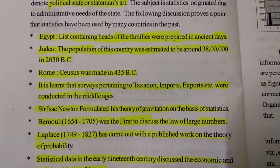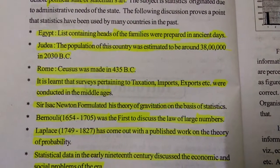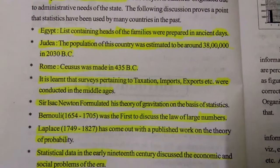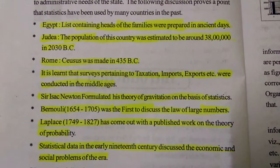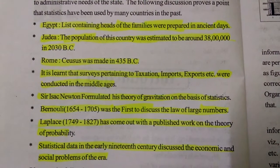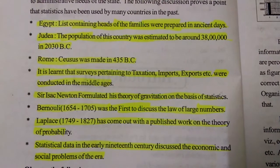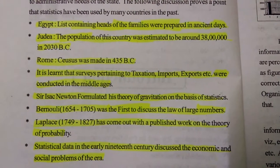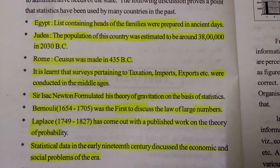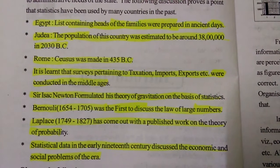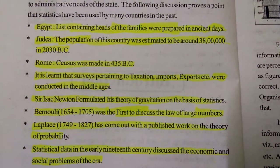Sir Isaac Newton formulated his theory of gravitation on the basis of statistics. Bernoulli (1654–1705) was the first to discuss the law of large numbers. Laplace (1749–1827) published work on the theory of probability and statistical data in the early 19th century, discussing economic and social problems of the era.